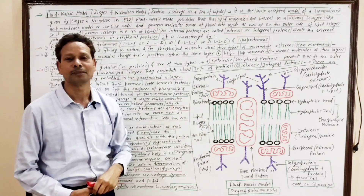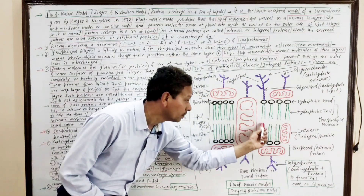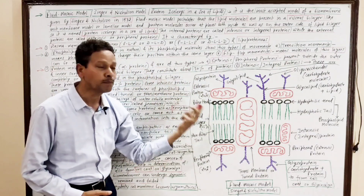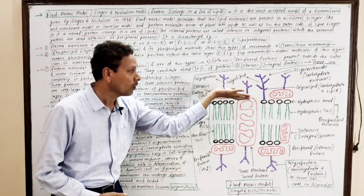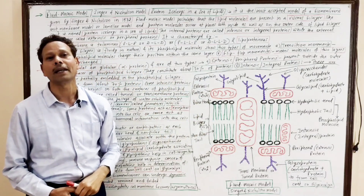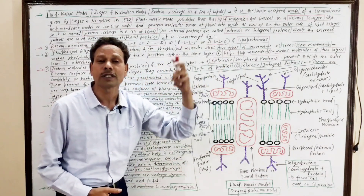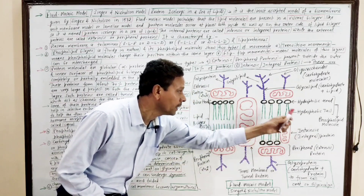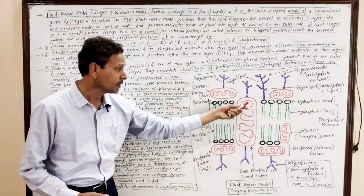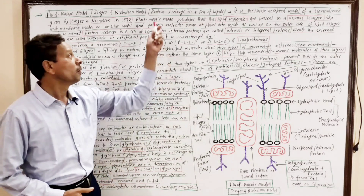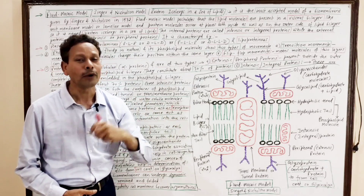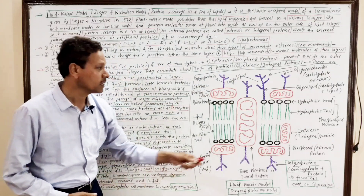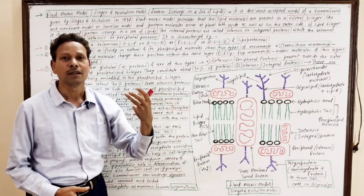According to Singer and Nicholson's Fluid Mosaic Model, the proteins present in the cell membrane are found on the outer surface as well as inside the phospholipid bilayer. The protein molecules, which are globular alpha proteins, present outside are extrinsic or peripheral proteins, while those inside the bilayer are intrinsic or integral proteins. That is why this model is also described as 'protein icebergs in a sea of lipids,' as the phospholipid exists in a quasi-fluid viscous state.